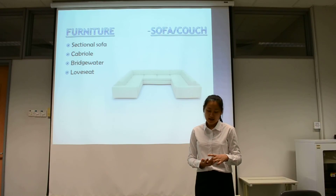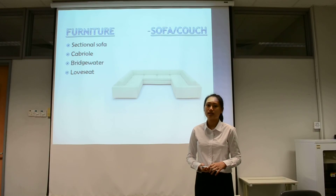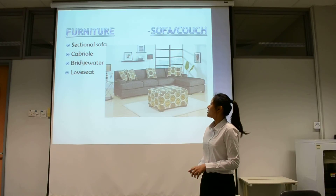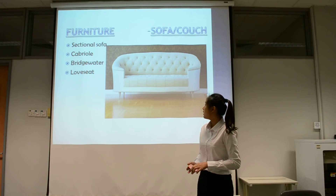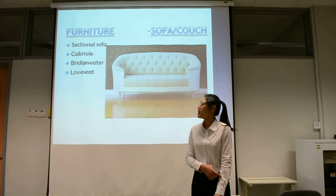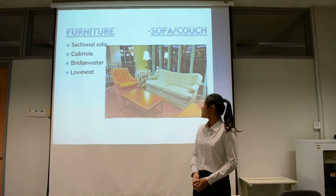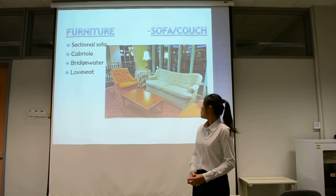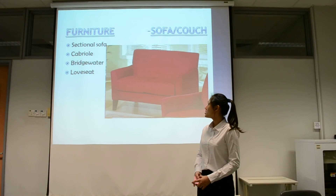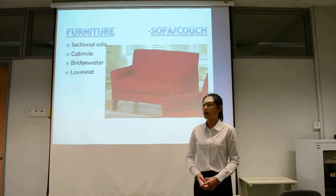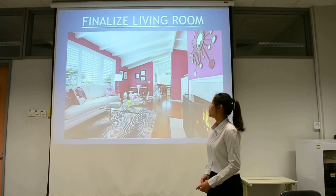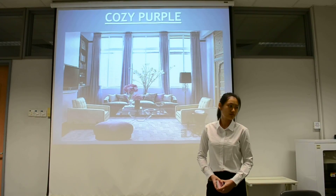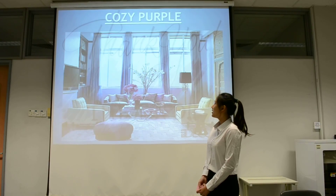Miniature sectional sofas are called multi-piece sofas. They often come in a U-shape and an L-shape. The loveseat is an umbrella term for a seat for two people. This is an example of a finalized living room. Thank you.